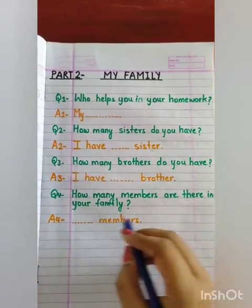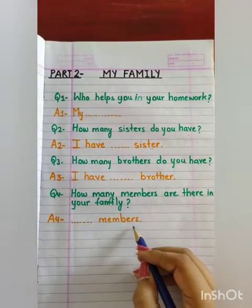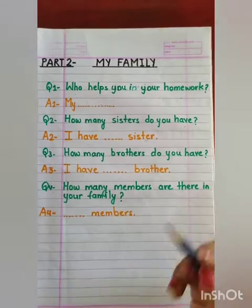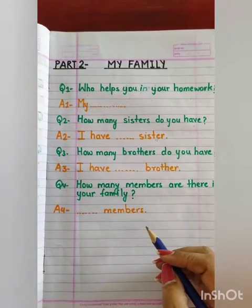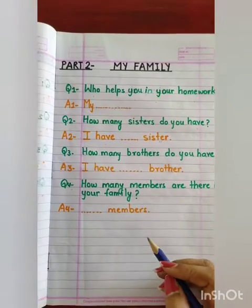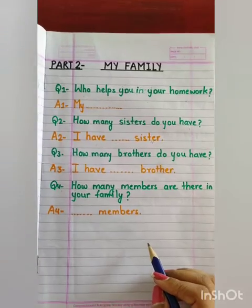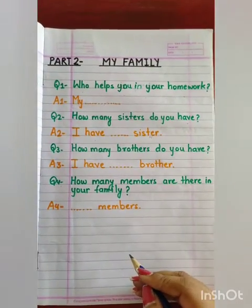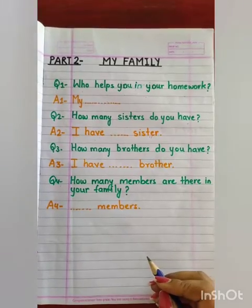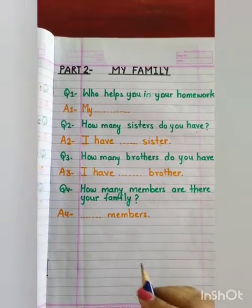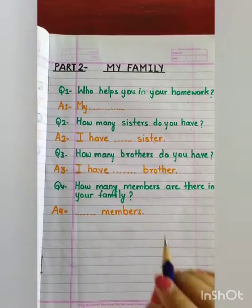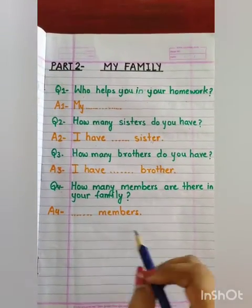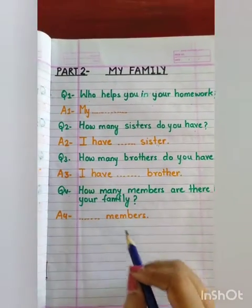Now the last question is: How many members are there in your family? Families can be joint families, nuclear families, large families, or small families. Some people have three members in their family, some have seven, eight, ten, or twelve members. Count how many people are living with you. Suppose you have 8 members in your family — when asked 'how many members are in your family', you will say '8 members'.